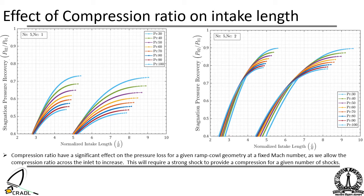Apart from geometrical parameters, flow parameters also play a significant role in determining the stagnation pressure loss. Compression ratio has a significant effect on stagnation pressure loss. For a given ramp geometry and fixed flight number, as we allow the compression ratio across the inlet to increase, this will require a strong shock to provide us compression ratio for a given number of shocks, therefore lowering the stagnation pressure recovery.